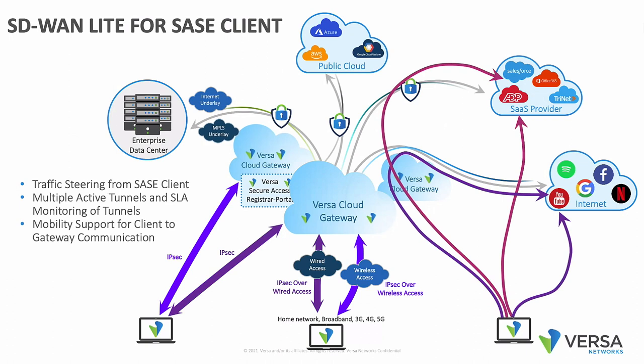You can also create these two tunnels over two different access circuits — one over wired and another over wireless. So if you're on a Zoom call and you move from your cube to a conference room, you can seamlessly move your traffic from a wired to a wireless connection with no actual drop. The user doesn't have to do anything — all of that is taken care of by the SASE client.